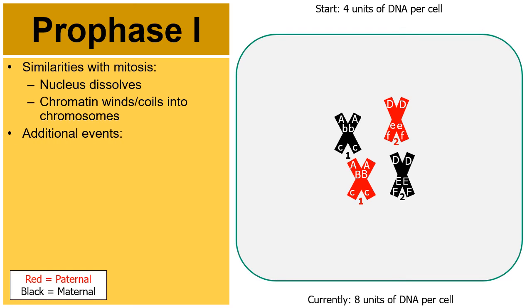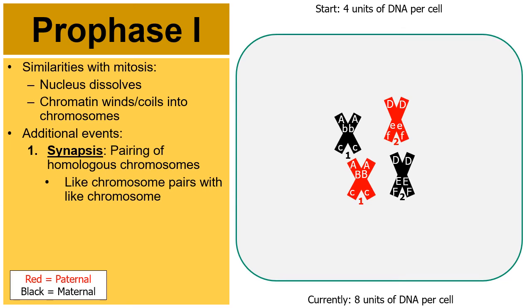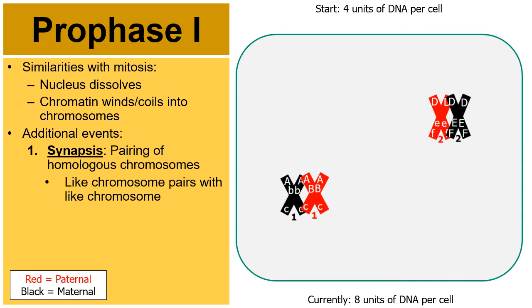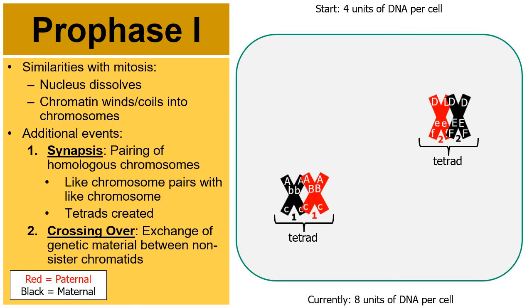A couple of additional events take place in prophase I. One is called synapsis — the pairing of homologous chromosomes. The two chromosome 1s, one red and one black, are homologous because they share the same chromosome number, as are the two chromosome 2s. Spindle fibers pull the homologous chromosomes together, creating groupings called tetrads. This sets up what is called crossing over — the exchange of genetic material between non-sister chromatids.